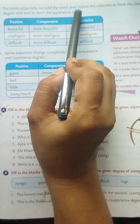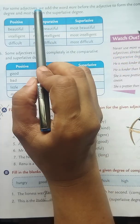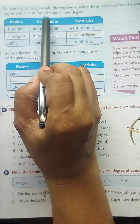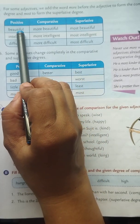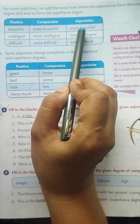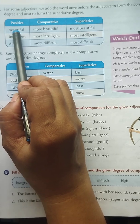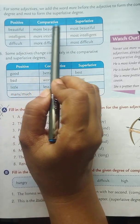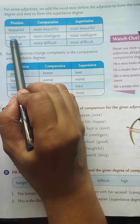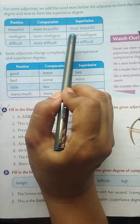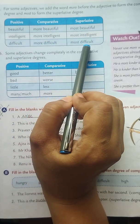For some adjectives, we add the word MORE before the adjective to form the comparative degree and MOST to form the superlative degree. Beautiful — more beautiful — most beautiful. Intelligent — more intelligent — most intelligent. Difficult — more difficult — most difficult.